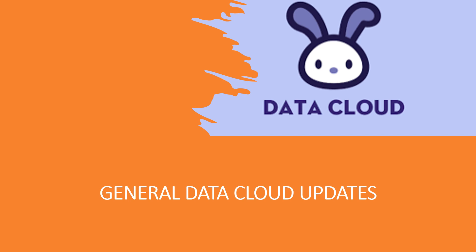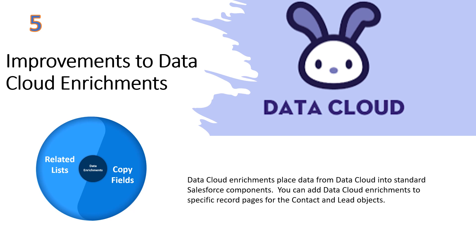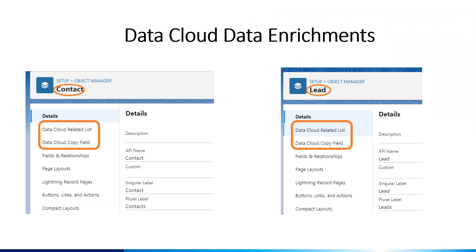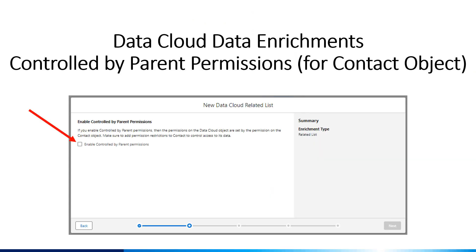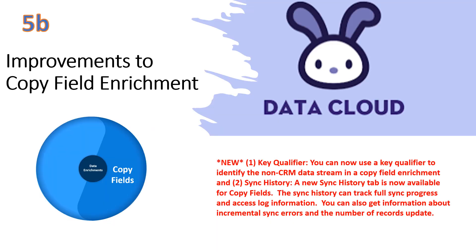Now, on to some general Data Cloud updates. Data Cloud enrichments, which allow you to place data from the Data Cloud into standard Salesforce components, were introduced in the Winter 24 update, and since then there have been some enhancements. You can create your Data Cloud data enrichments from within the Object Manager for the contact or lead object. For Data Cloud-related list enrichments, there is now a better way for you to control who can see the related lists. There's a checkbox you can use to enable permissions on the Data Cloud object based on the permissions defined for the contact object, which better ensures a cohesive security experience. For the copy field enrichment, there is now a Sync History tab. Also, you can now use a key qualifier to identify the non-CRM data stream in a copy field enrichment. With a key qualifier, you can identify the data source that is driving the results of the copy field enrichment.